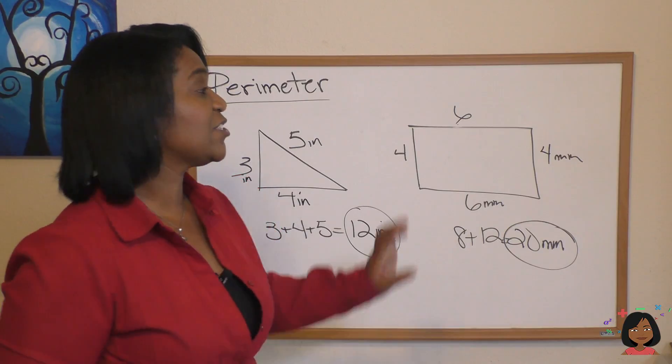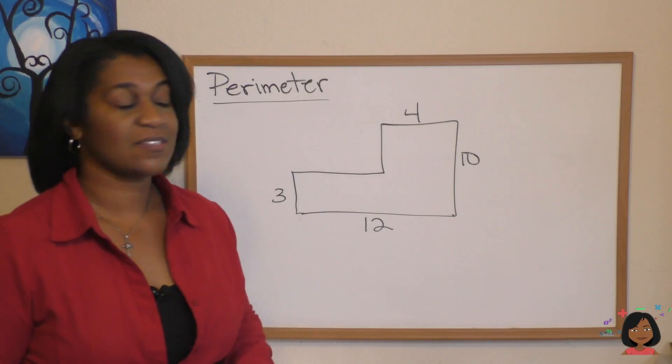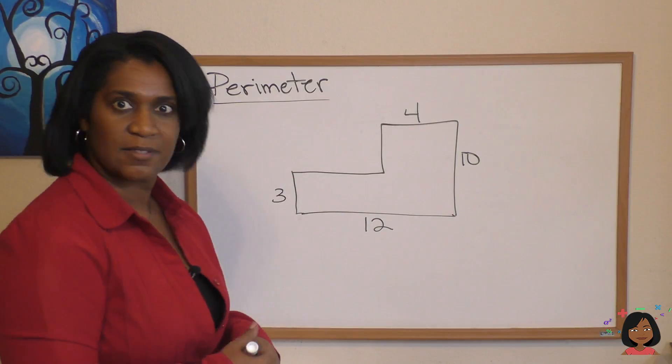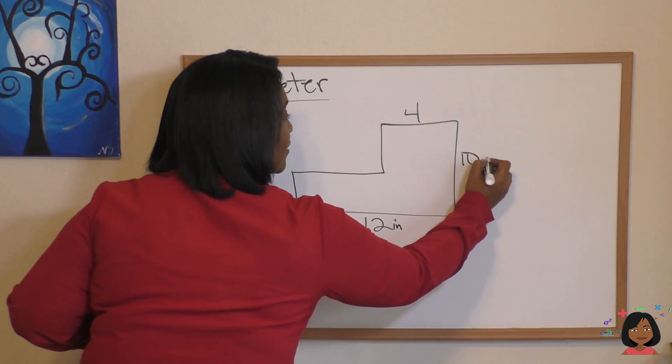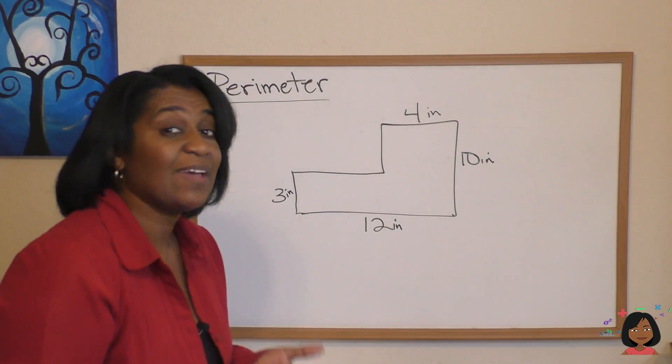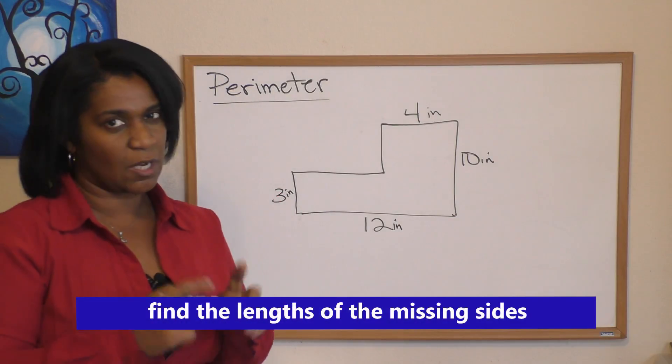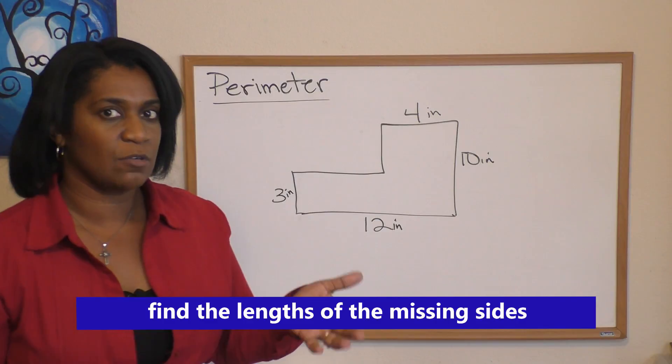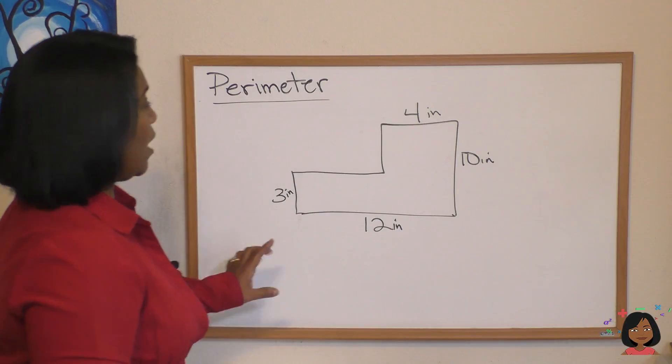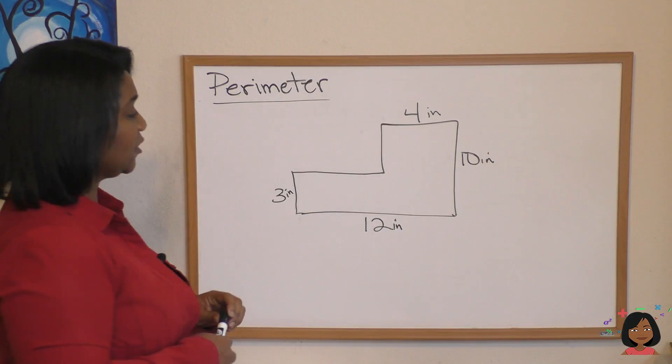Now again, let me give you something that's slightly more difficult where they don't necessarily give you every side. Take a look at this. We have a shape here and they've given us some of the sides. They gave us some of the sides but not all of the sides, so we're gonna have to use our smarts, which I know you've got tons of, to figure out the length of the sides that are missing. All right, we've got to figure out this one and we've got to figure out this one.